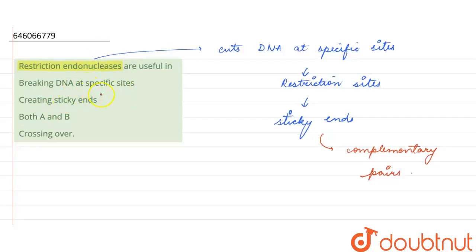From the options given to us, breaking DNA at specific sites is the function of restriction endonucleases, so this is true. Creating sticky ends is also true, so the correct answer will be both A and B.